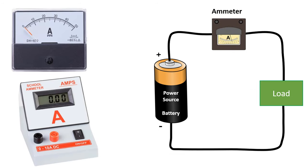An ammeter is an instrument that measures electric current in a circuit. It is connected in series with the part of the circuit being measured, so the current flowing through the circuit also flows through the ammeter. Ammeters are designed to measure a wide range of current values, from very small currents to large currents.